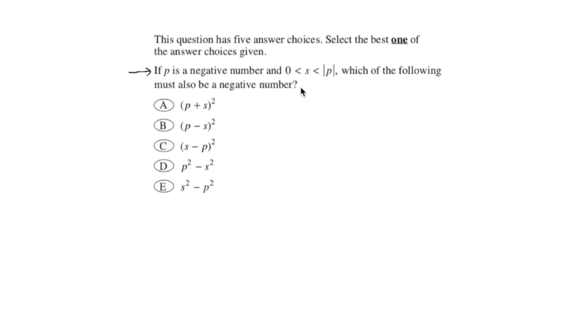If p is a negative number and 0 is less than s, which is less than absolute value of p, another way of looking at this is saying that s is between 0 and the absolute value of p, which of the following must also be a negative number?